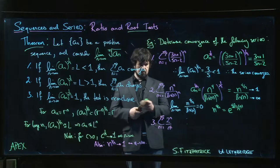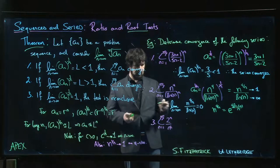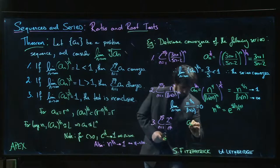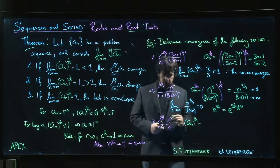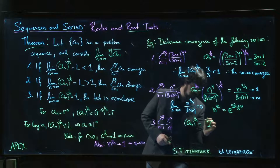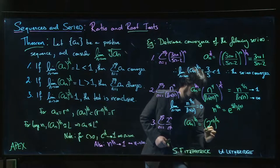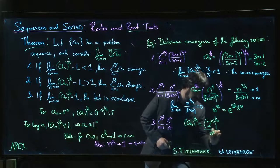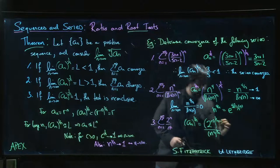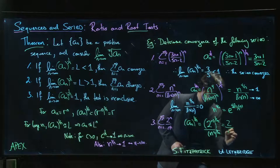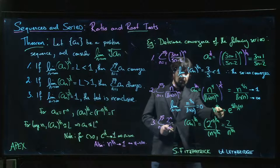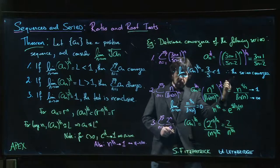Okay, coming to the last one. a_n to the 1 over n is going to be 2 to the n to the 1 over n divided by n squared to the 1 over n. So we get 2 over n to the 2 over n. And using the same reasoning as here, this is going to go to 1, that's just a 2. And that goes to 2.